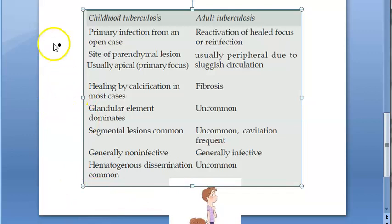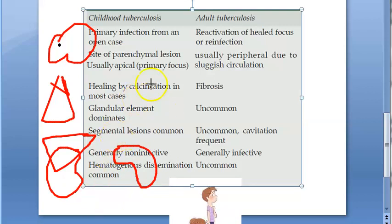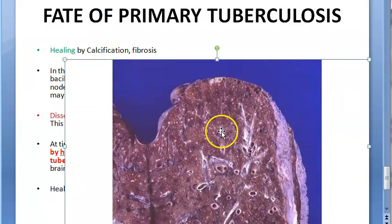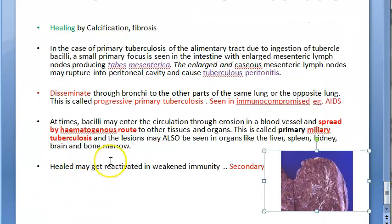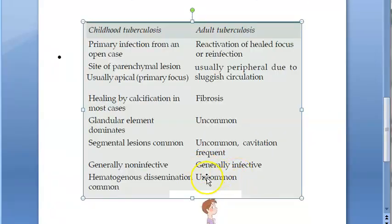Via hematogenous spread, TB can also go to the liver, kidney — causing renal tuberculosis — spleen, any glands, peritoneum, bones and joints, and skin. Wherever blood goes, TB will also go. Miliary tuberculosis photo has been covered. Also the alimentary tract and tabes mesenterica — the lymph nodes involved. Hematogenous dissemination is uncommon in adults.